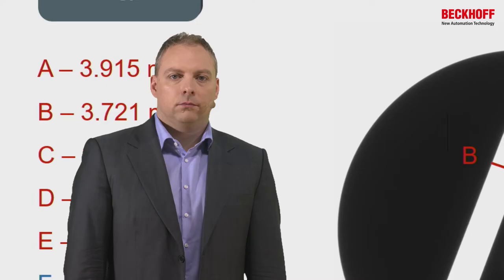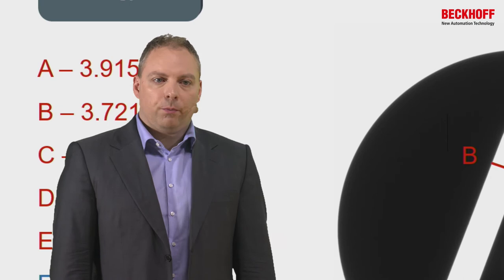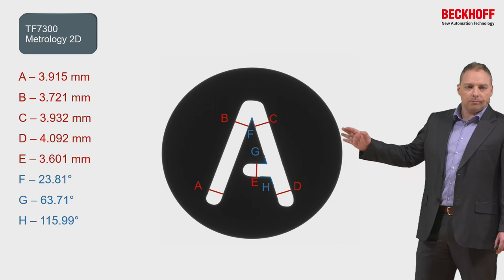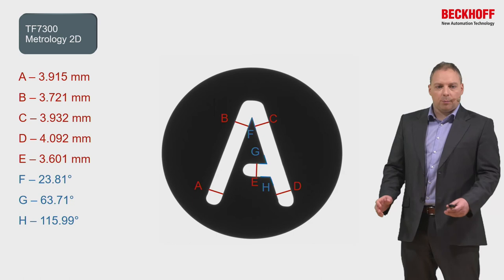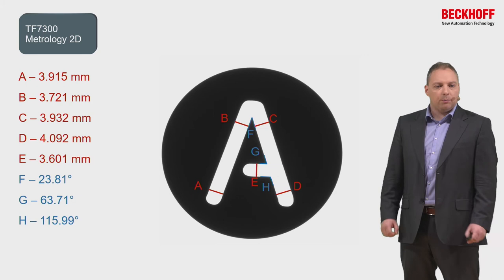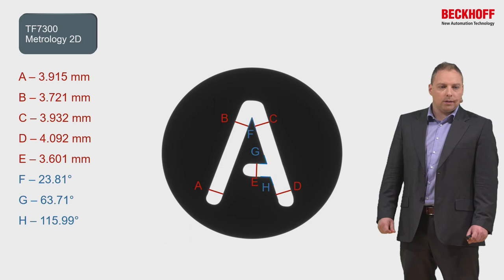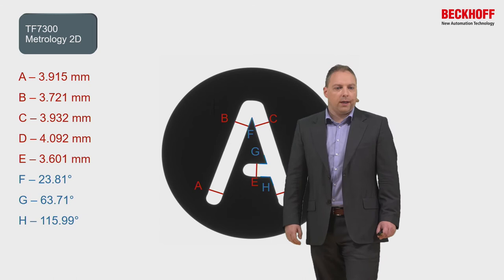The next example is from the measurement package, showing a combined measurement of different values. We first define the points where we measure, which can be related to the center point — this means if the object is not perfectly aligned in the image, we can still find all the measurement points. The measurements are executed in a state machine, and in the end we have all the single results and can determine if they are inside our defined limit or range and whether it's a good part or not.